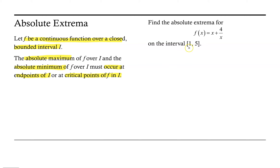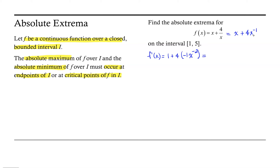So let's go ahead and get started. We'll first find the critical points of our function. To find the critical points, we'll need to take the derivative and set it equal to 0. I'm going to rewrite my function as x plus 4 times x to the negative 1. This will allow me to use the power rule to help find the derivative of our second term. So now our derivative, f prime of x, is 1 plus 4 times negative 1 times x to the negative 2.